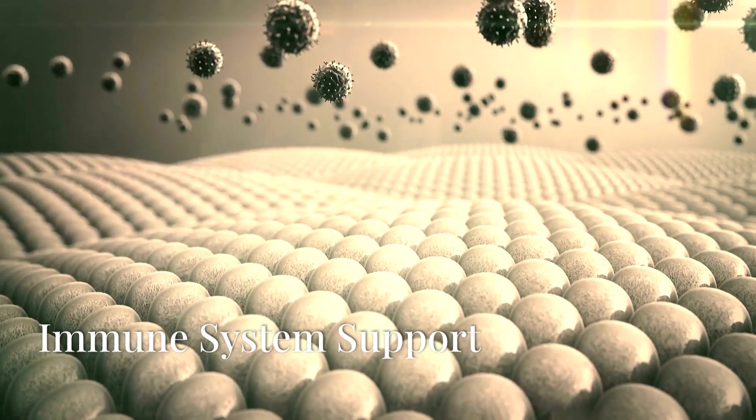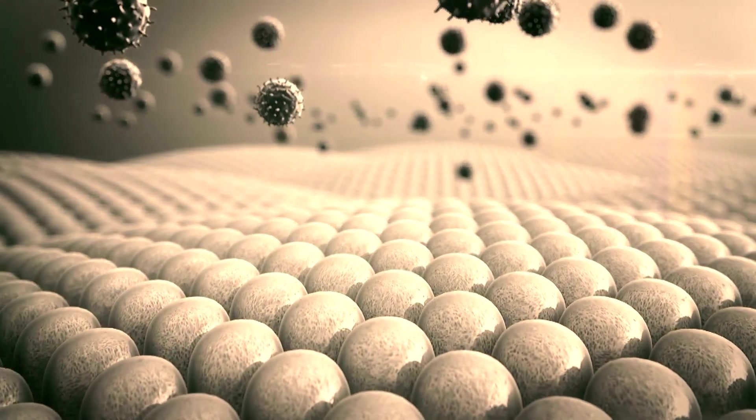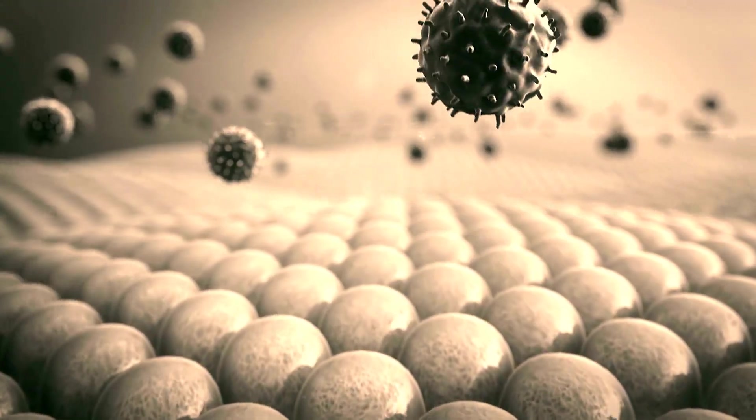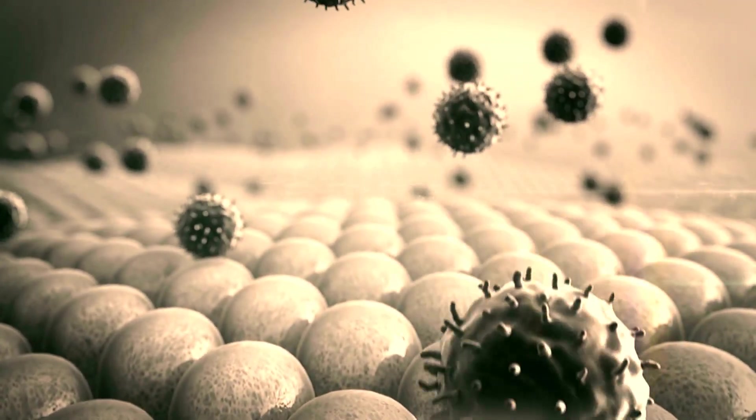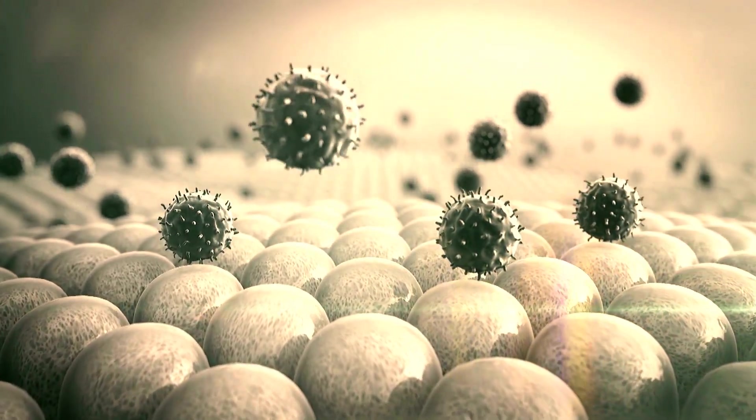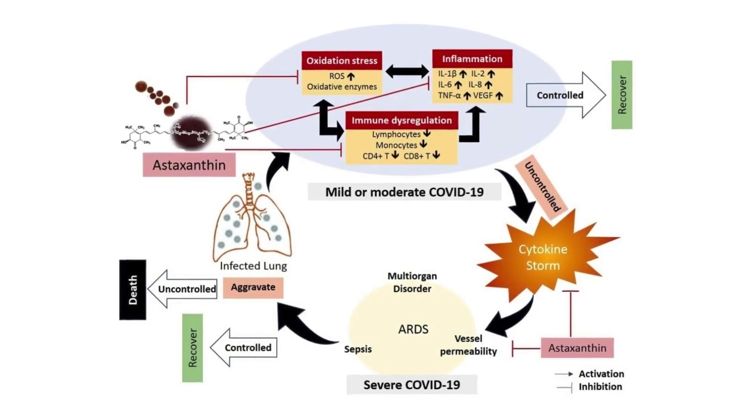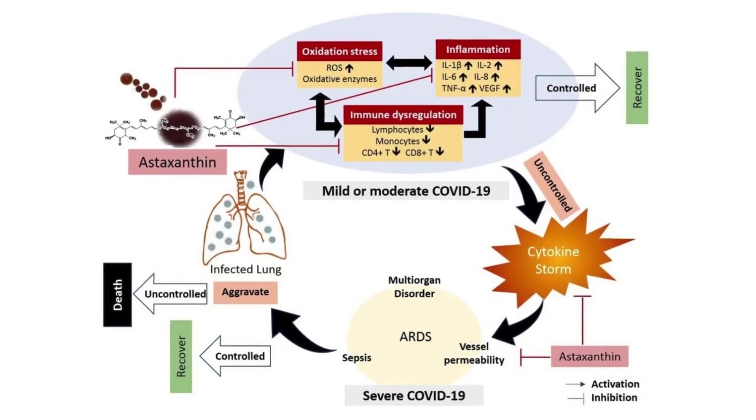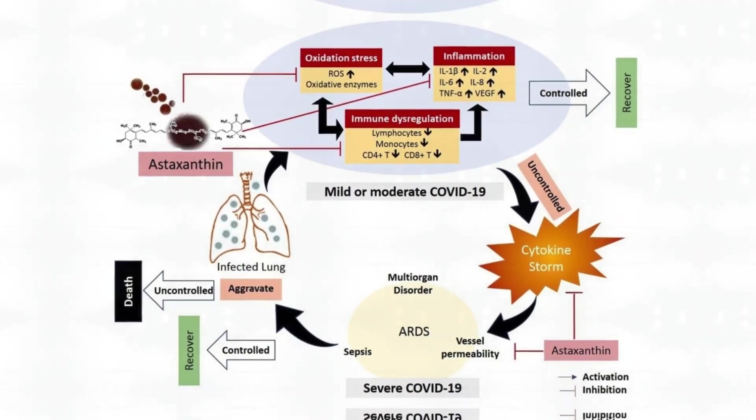Astaxanthin enhances the immune response by boosting the production and activity of various immune cells, including lymphocytes, natural killer cells, and macrophages. This increased immune function helps the body better defend against infections and diseases, supporting overall health and resilience.